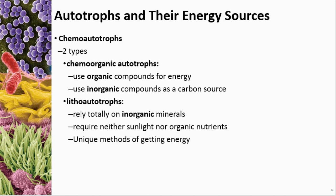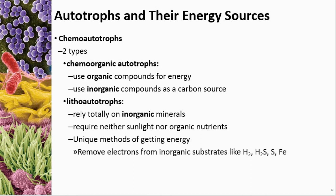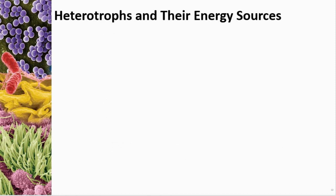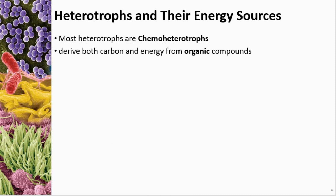Lithoautotrophs have very interesting methods for getting energy — they can remove electrons from things like hydrogen molecules, hydrogen sulfide, sulfur, and iron, combining them with CO2 and hydrogen to create their own organic molecules. Most heterotrophs are chemo-heterotrophs, which is what humans are. They derive both carbon and energy from organic compounds, getting energy in a process called respiration — cellular or internal respiration — which many bacteria also do.